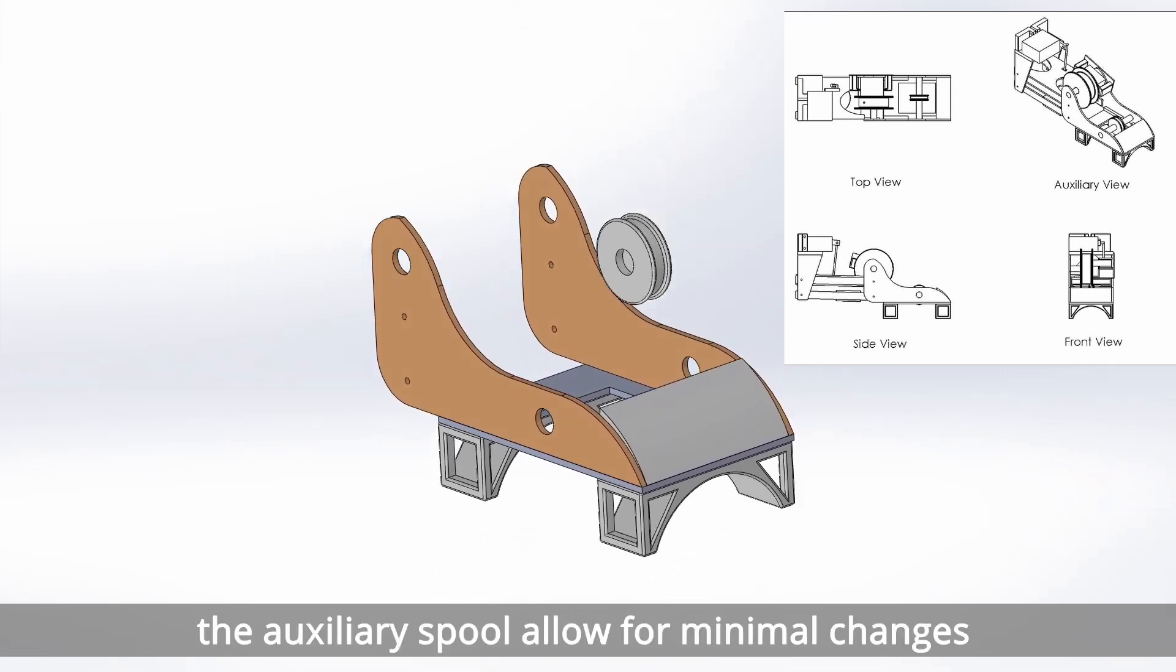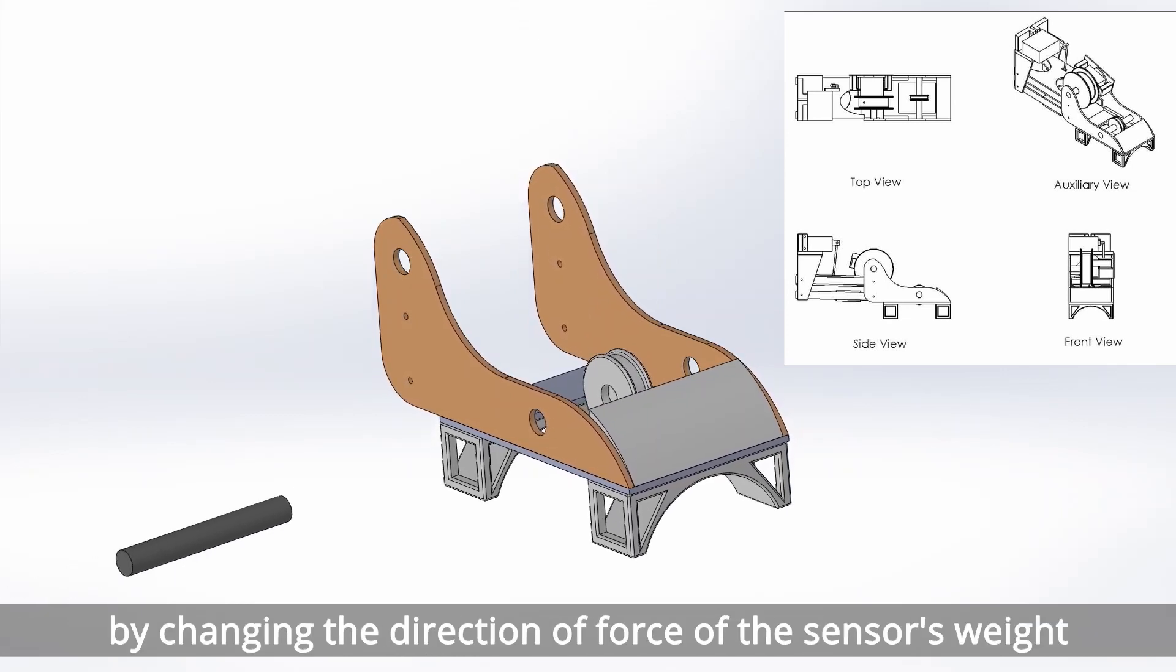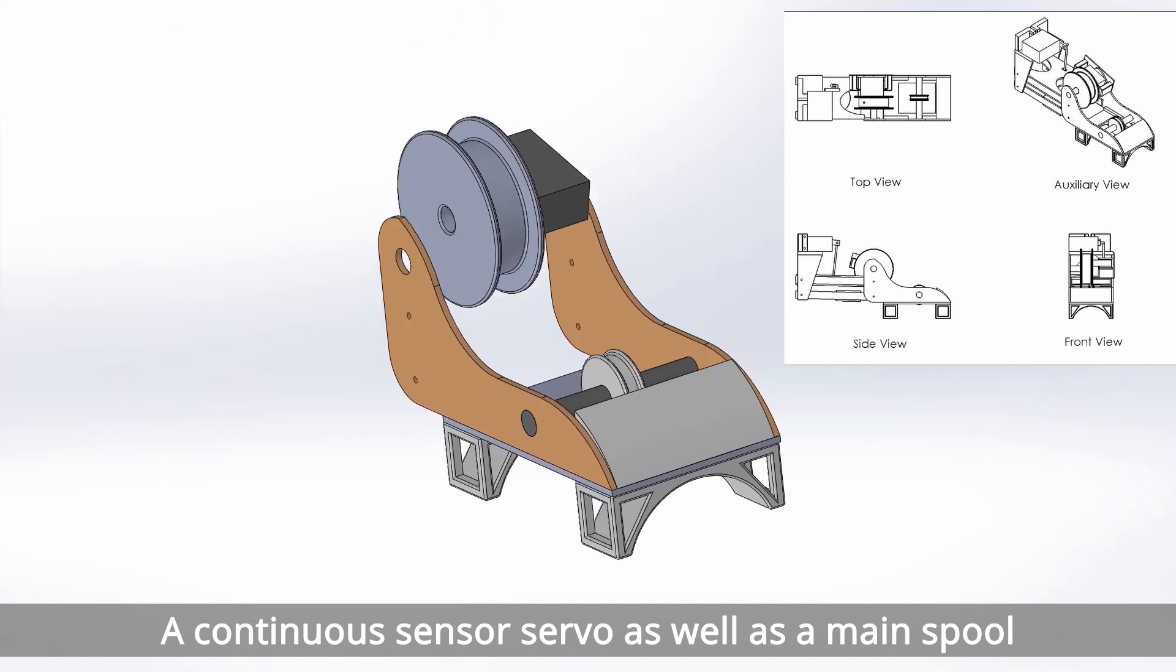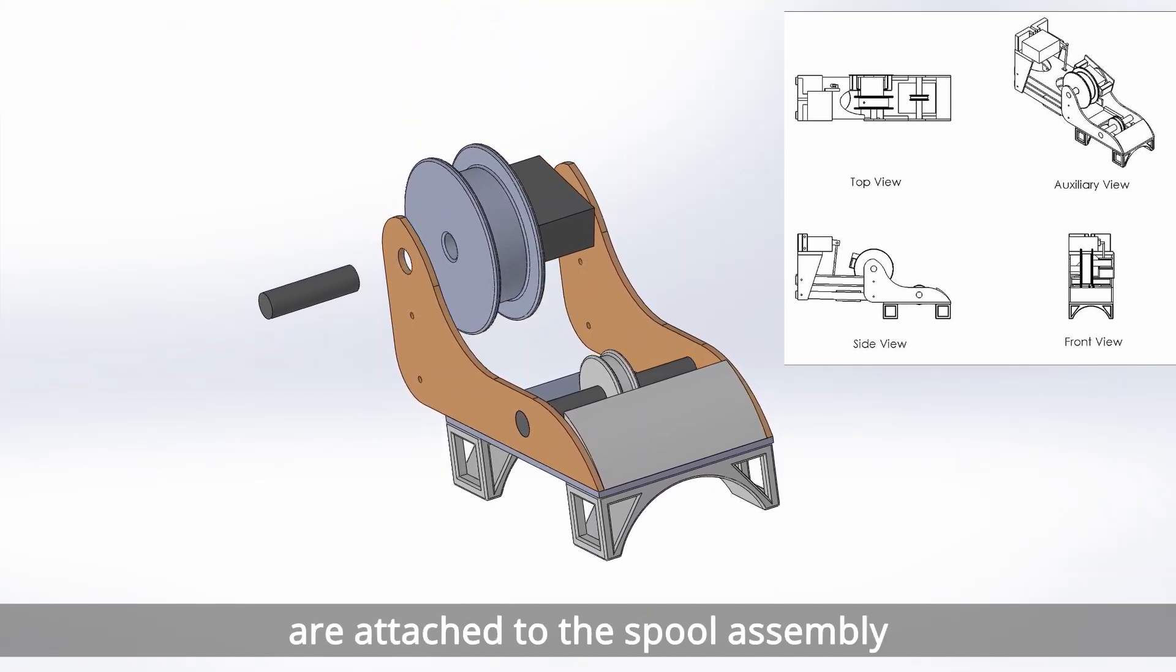The auxiliary spool exists to allow for minimal changes in the center of gravity of the plane by changing the direction of force of the sensor weight. A continuous motor servo as well as the main spool is located near the point where the deployment arms are attached to the lower assembly.